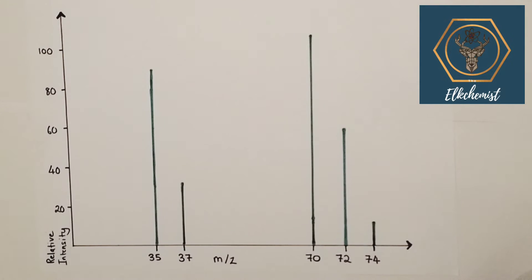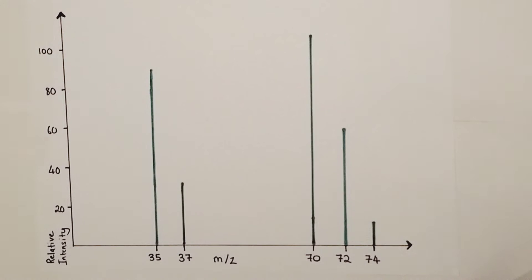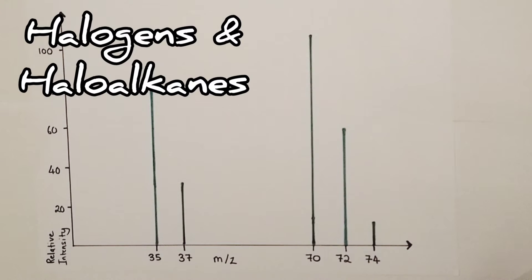Hi there, welcome to this Alchemist Chemistry A-level video looking at how to interpret mass spectra. In this particular video we're going to look at how to interpret the mass spectrum of a halogen and a haloalkane.